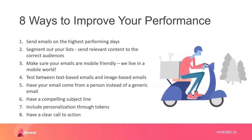To wrap up the email section, here are eight ways to improve your performance. First, send emails on the highest-performing days — Tuesdays and Thursdays as discussed. Second, segment your lists — this is critical. Consider where developers are versus where purchasers are; the messaging, colors, and images all differ. There are so many things to consider to get the best result, and list segmentation requires you to really understand your audience and what they expect.